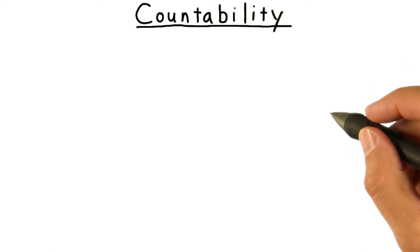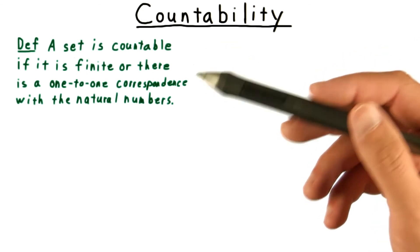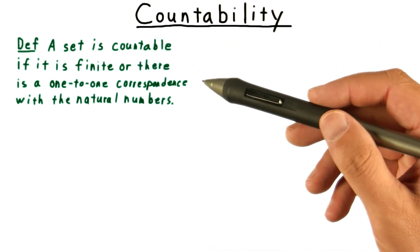Let's make this notion of countable and uncountable sets precise with a formal definition. We say that a set is countable if it is finite, or if there's a one-to-one correspondence with the natural numbers.